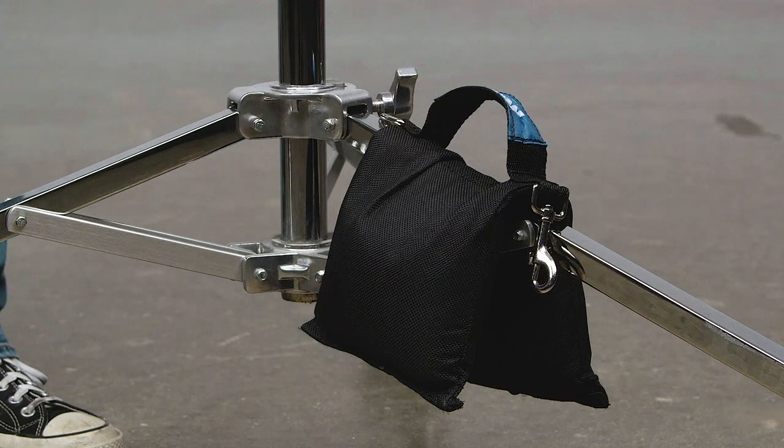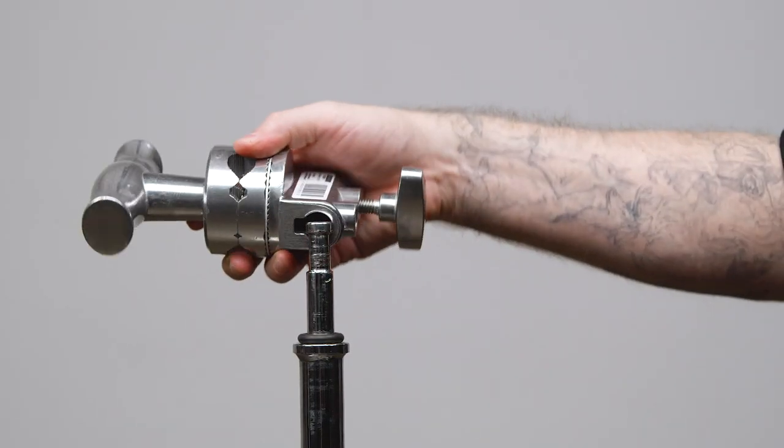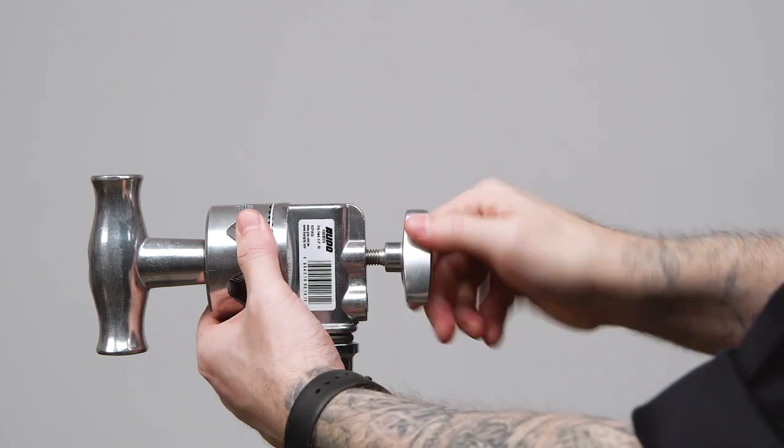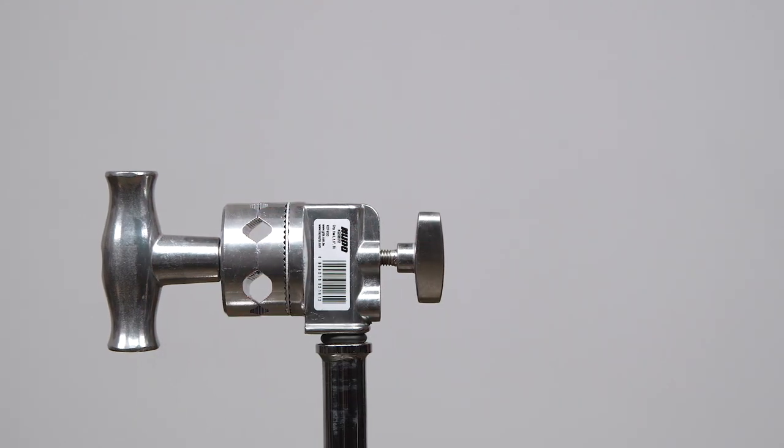Let's mount our Kino Flow fixture to a grip head on top of a C-stand. Let's first sandbag our stand for increased stability. Now slide the baby 5/8 inch receiver of our grip head onto the top baby pin of our C-stand and turn the knob clockwise to secure in place.